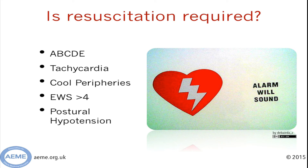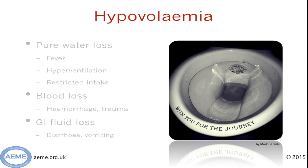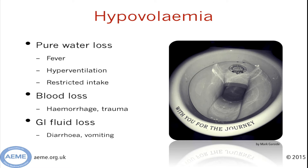The first thing to consider when you are asked to write up fluids is whether the patient is fluid depleted and needs resuscitation. Use the ABCDE approach and look for signs like tachycardia or cool peripheries. If the patient can stand up, postural hypotension — that's a 20mmHg drop in systolic blood pressure — is a very sensitive sign for volume depletion. If you detect hypovolaemia, ask yourself what fluid has been lost: is it a pure water loss such as poor intake or increased losses due to fever or tachypnoea? Is it blood loss due to haemorrhage or trauma? Or is the loss mostly from the GI tract due to diarrhoea, vomiting, or both?